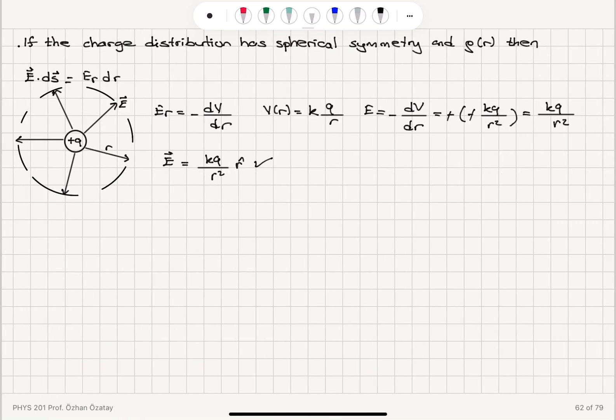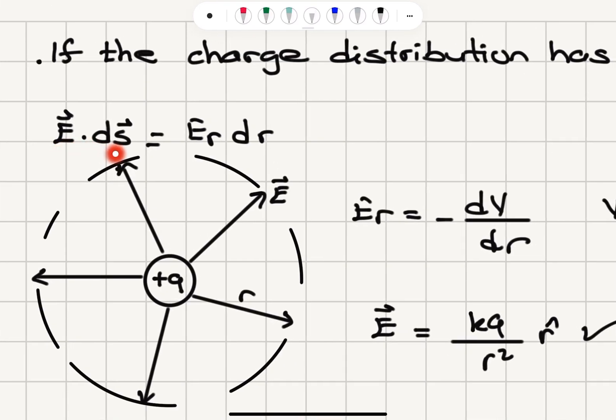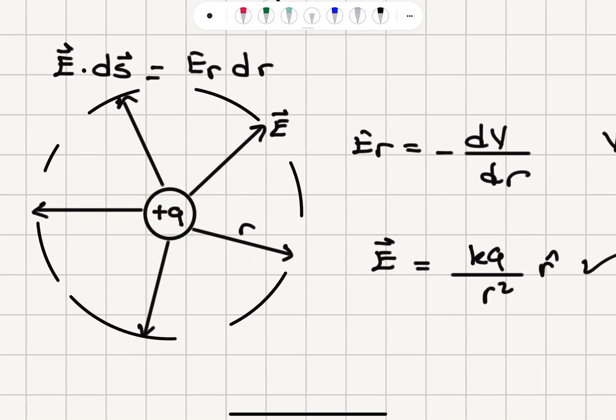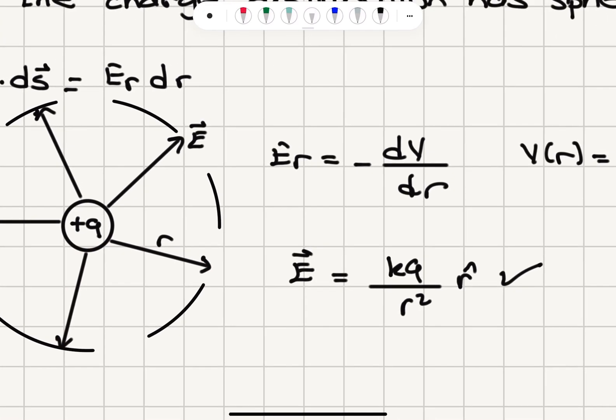Now what happens if the charge distribution has spherical symmetry? So we have charge density as a function of radial distance r. Then this E dot ds will become the radial component of electric field multiplied with dr. For example, if you consider a point charge plus q, the electric field lines point radially outward in r-hat direction. Er is equal to minus dV dr.